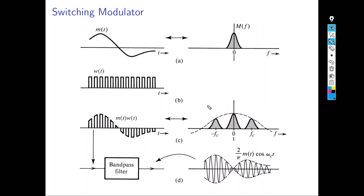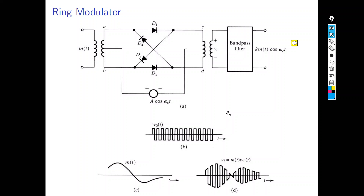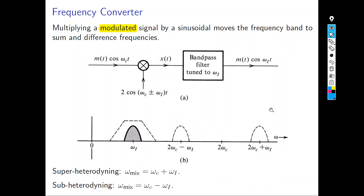So the switching modulator uses a series of pulses multiplied by the message signal to get the modulated signal. There is also the ring modulator, which uses diodes and a transformer to produce the modulated signal, but it is more complex. In practice, for wireless systems we prefer to use the multiplier modulator because it requires fewer processing steps.